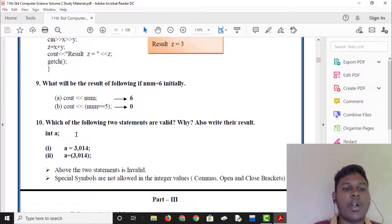What will be the result of following if n is equal to 6 initially? Cout num is equal to n equal to 5. Then we have n equal to operator. We have true or false answer. False or list is 0. True or list is 1. Now, num n is equal to 5 is 6. Num is equal to 5. This is 0.